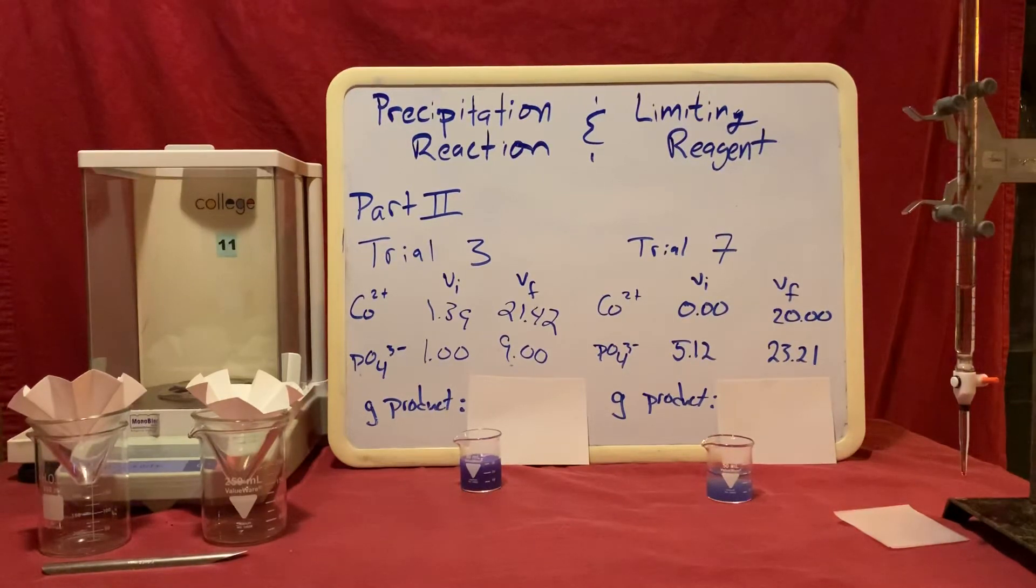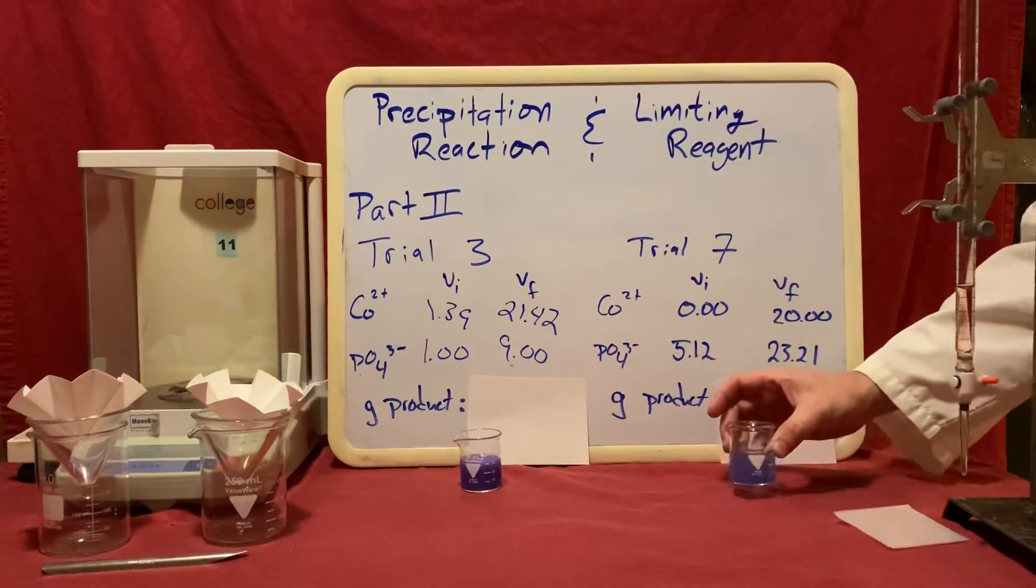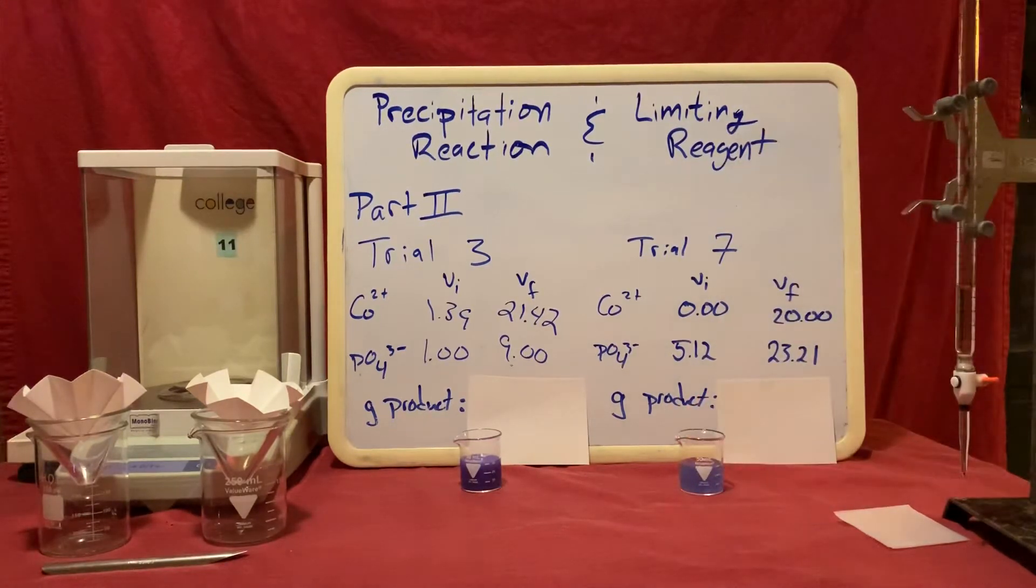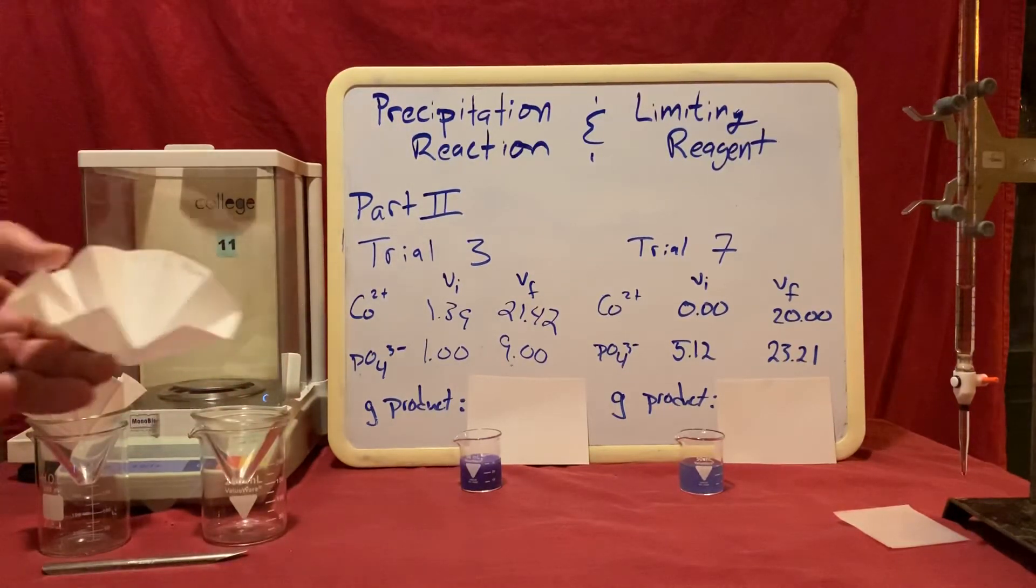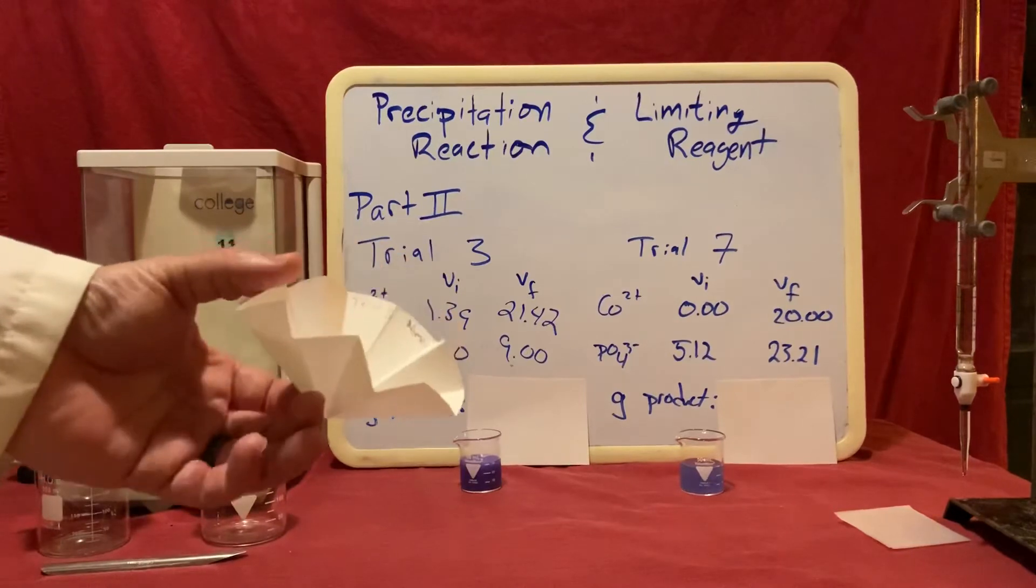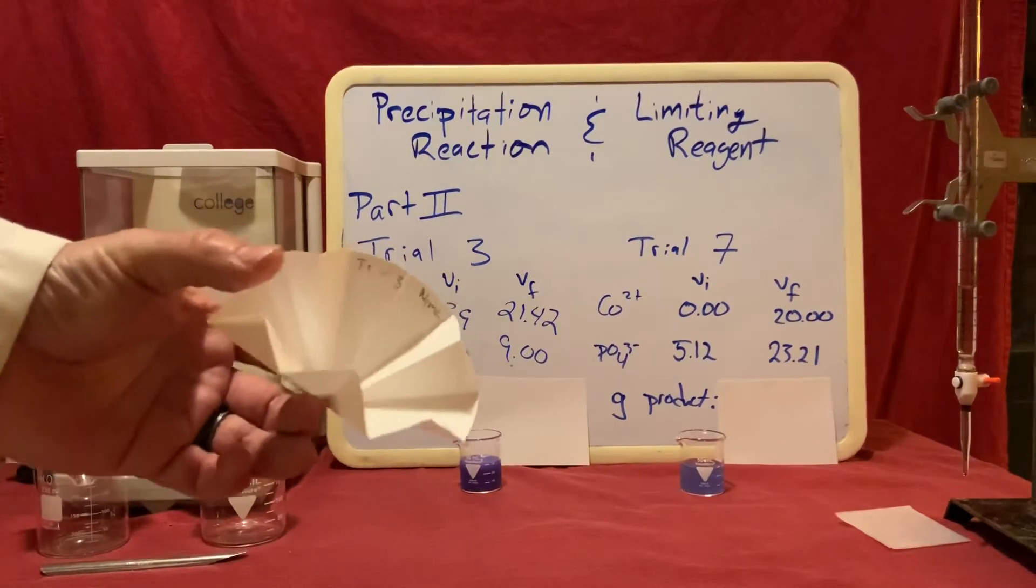Now once these have had the opportunity to react for 10 minutes, we're going to filter them in order to collect the solid to determine our yield. Before we do this, we want to prepare our filter paper. You can see here that I have fluted this filter paper. I folded it so that it'll be easier to filter our solids with.